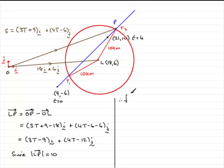...so that's 3T minus 9 all squared, plus 4T minus 12 all squared, equals this hypotenuse, if you like, in Pythagoras' theorem: 10.